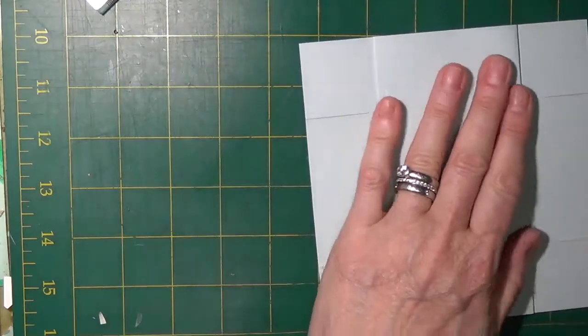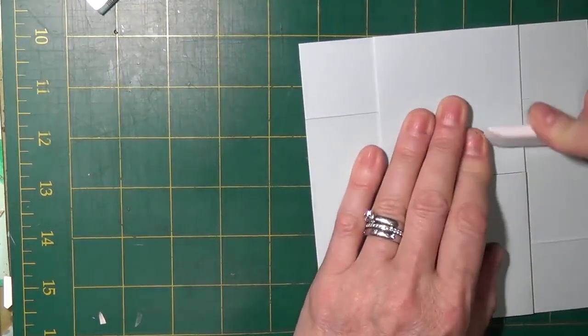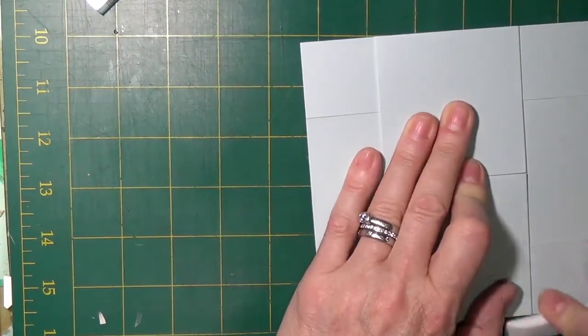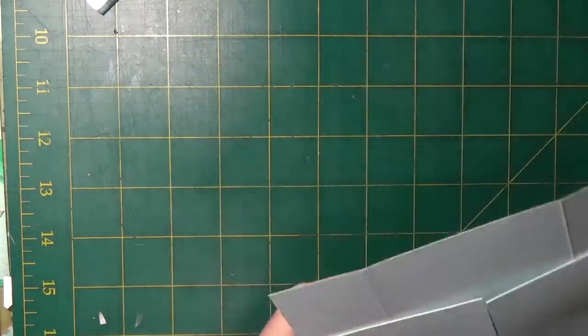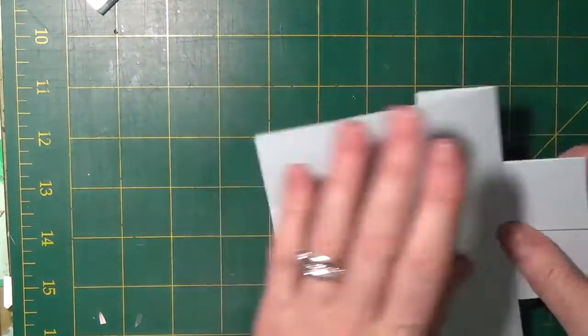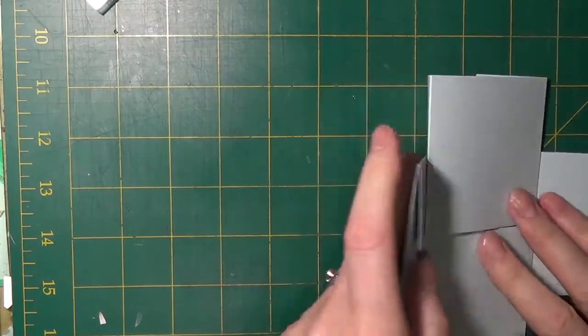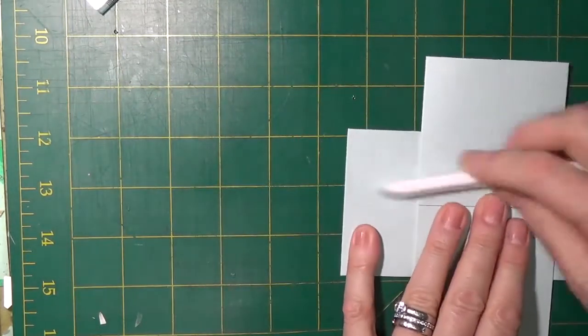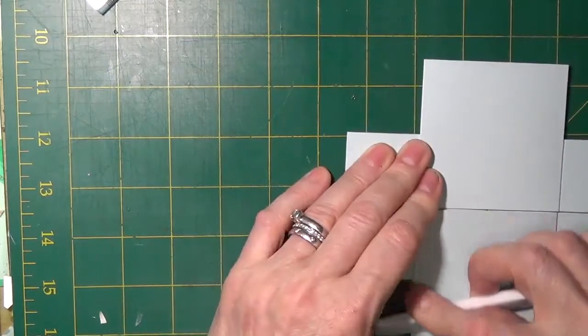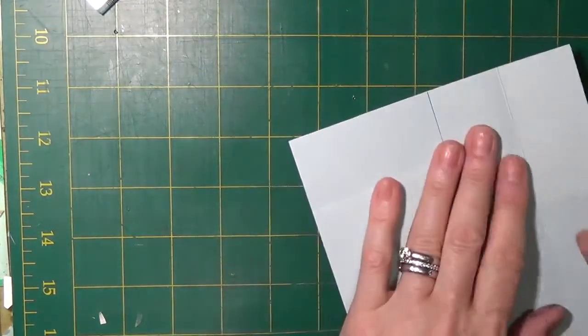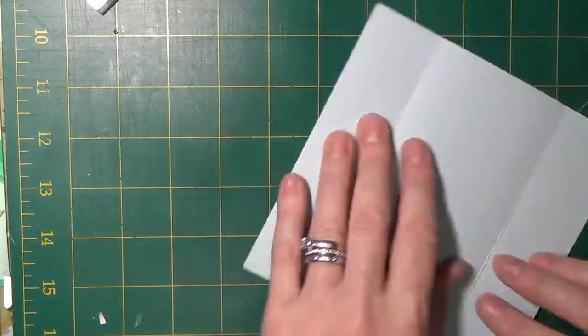It's easier if you hold one hand down as I'm doing here and then burnish the score line on the opposite side. So use your left hand and burnish the right side and then do the opposite. Work each of the score lines folding the card. You just want to make it easier for the recipient to be able to work it.